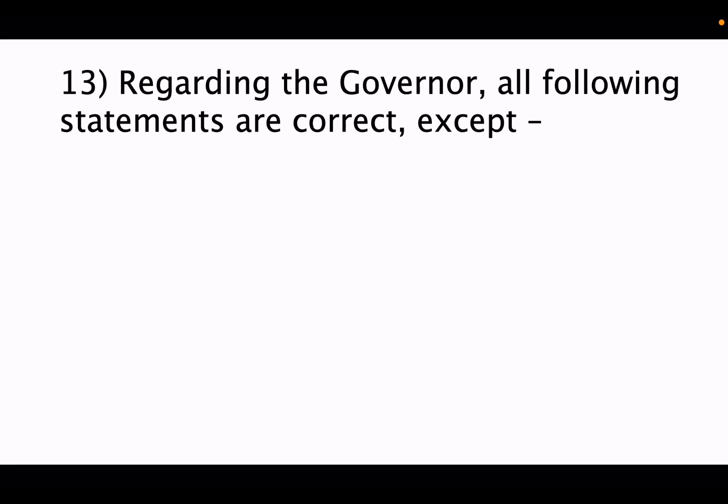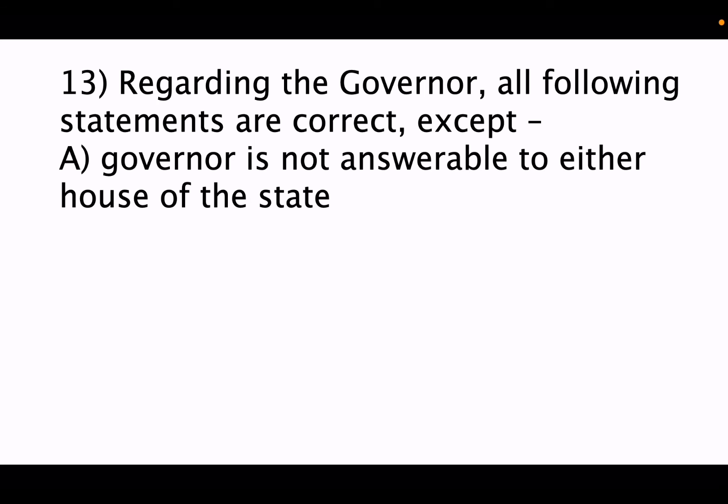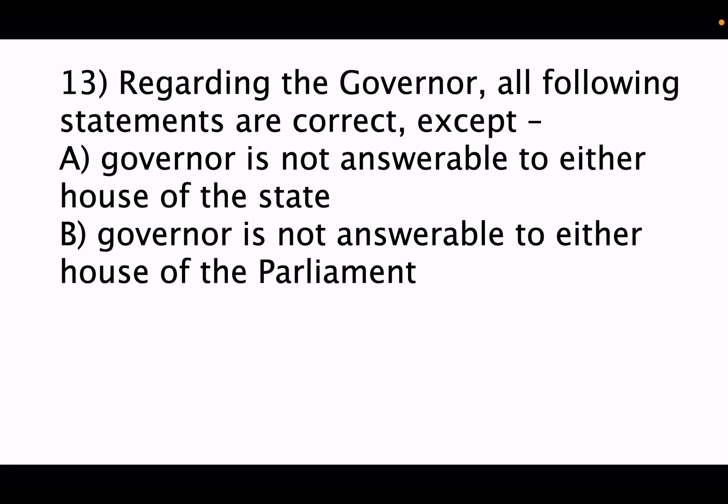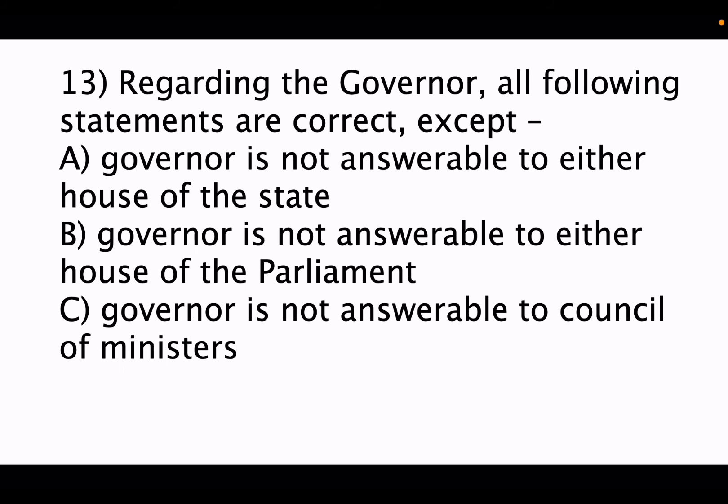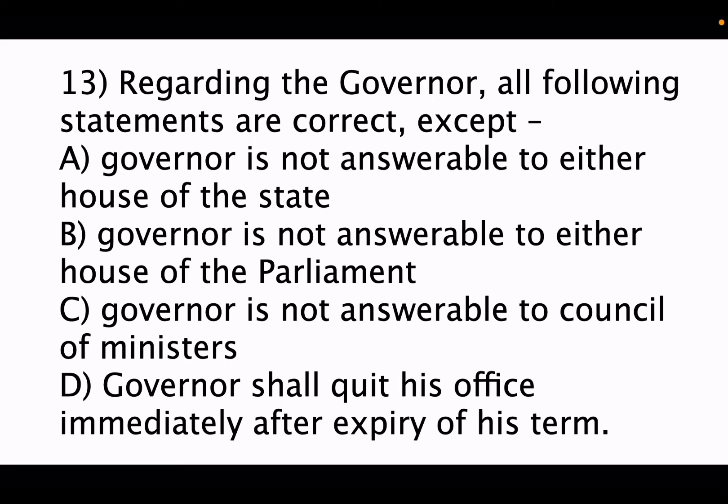Thirteenth question: regarding the governor, which of the following statements are correct except? Option A: governor is not answerable to either house of parliament. Option B: governor is not answerable to the council of ministers. Option D: the governor shall quit his office immediately after expiry of his term. Governor-related articles are from Article 152 to 162. The correct answer is option D — it is wrong because the governor can continue until the next governor is appointed, and can serve two or more states.